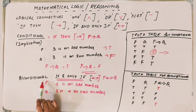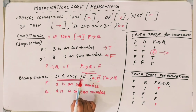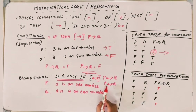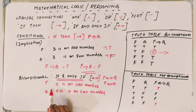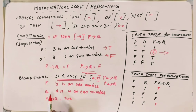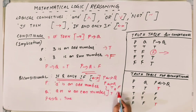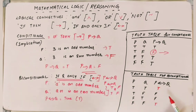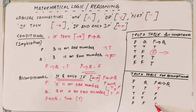Biconditional statements use 'if and only if' as a connector, denoted as P double-arrow Q. Say P is 'A is an odd number' and Q is 'A + 1 is an even number'. P biconditional Q is true only if both P and Q are true or both are false — both truth values must be the same. If any one truth value differs from the other, P biconditional Q is false.